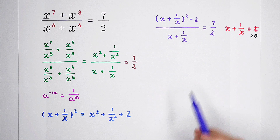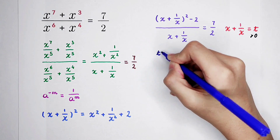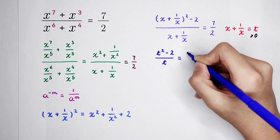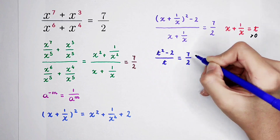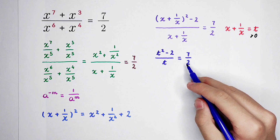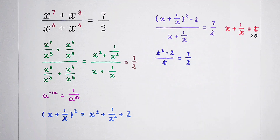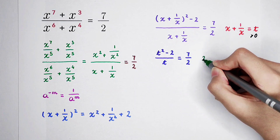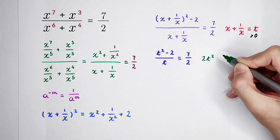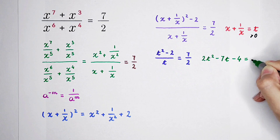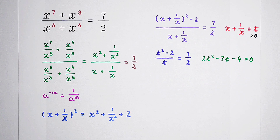It turns into an equation about t: t squared minus 2, divided by t, equals 7 over 2. Cross multiplying gives 2 times t squared minus 4 equals 7t. This is a quadratic equation about t: 2t squared minus 7t minus 4 equals 0.